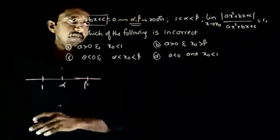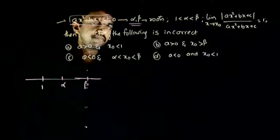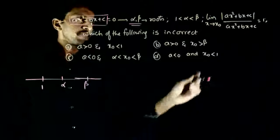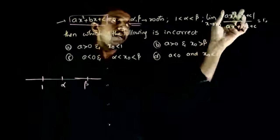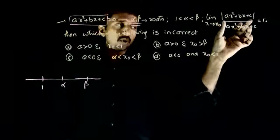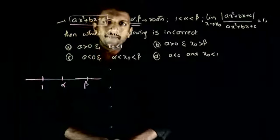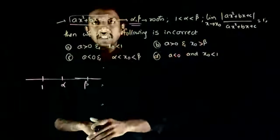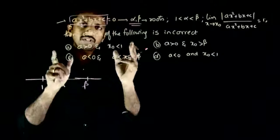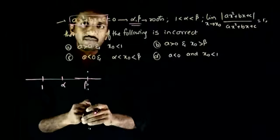So alpha is greater than one and beta is greater than alpha. The limit as x tends to x0 of mod of ax square plus bx plus c by ax square plus bx plus c equals one. So which of the following statements are incorrect? That is the question.